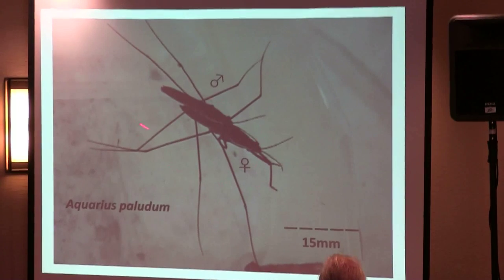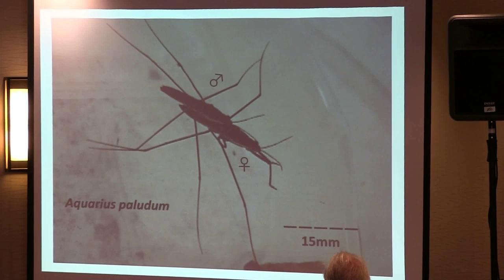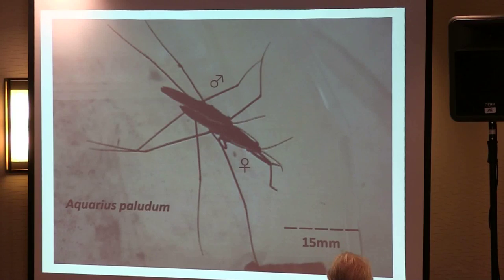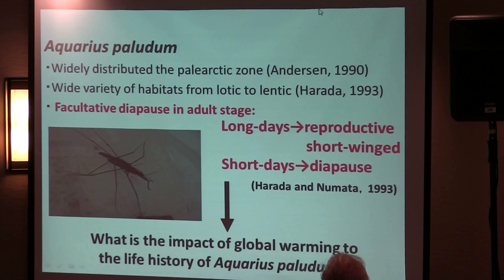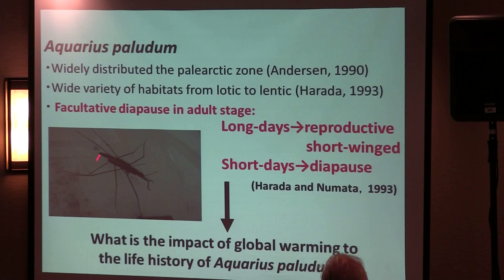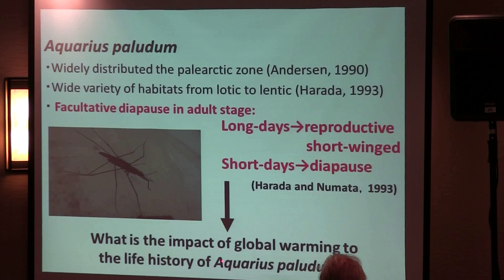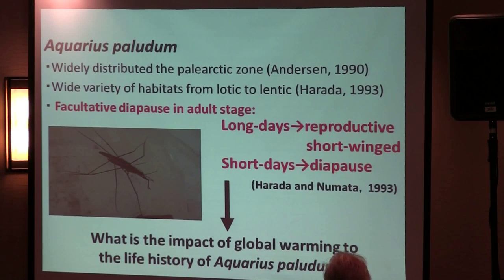This freshwater species is somewhat bigger and larger than the oceanic sea skaters. It has two types of wings: short and long wings, and is widely distributed to the Para-Arctic zone across a wide variety of habitats, from lotic to lentic. If they are grown under a short day, they enter diapause — a kind of sleeping. Under a long day, they reproduce very actively. What is the impact of global warming on the life history of this species?